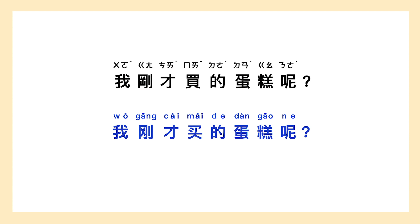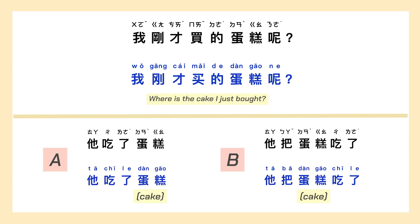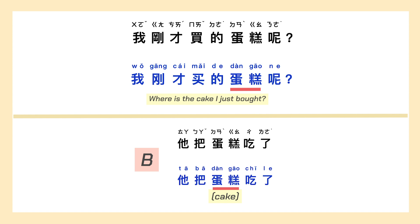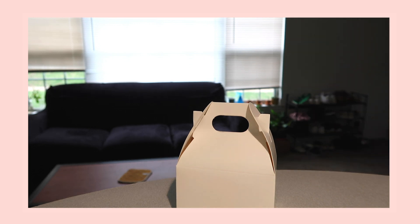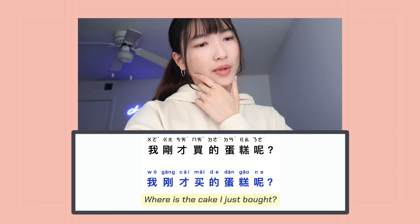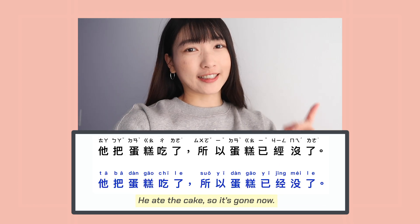Now if I ask you 我刚才买的蛋糕呢? How would you respond? A. 她吃了蛋糕。 B. 她把蛋糕吃了。 The answer is B, because there is a certain object we want to talk about, and we use the 把 construction to express what she did to the cake and what happened to it. So the conversation could be: 我刚才买的蛋糕呢? 她把蛋糕吃了。 所以蛋糕已经没了。